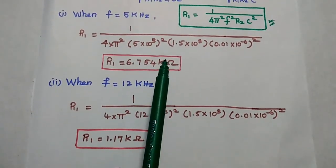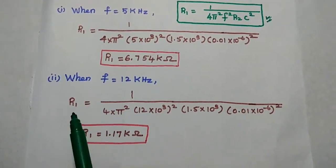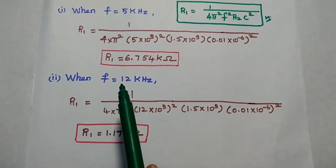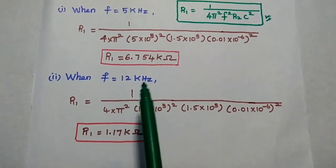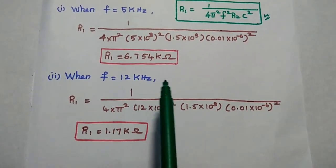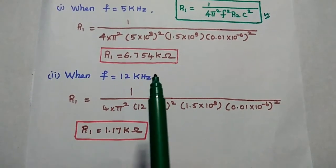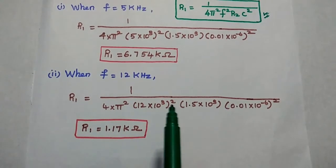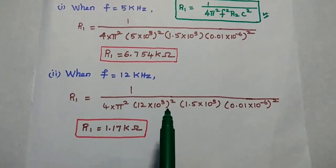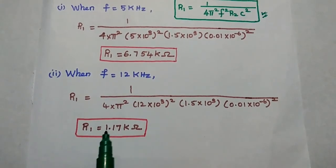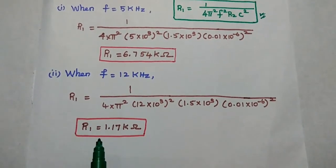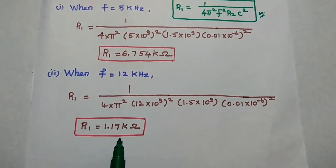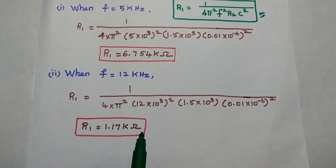Similarly, we find R1 at f equals 12 kilohertz. Substituting f equals 12 kilohertz into the formula R1 equals 1 by 4 pi squared f squared R2 C squared, we get R1 equals 1.17 kilo ohm.